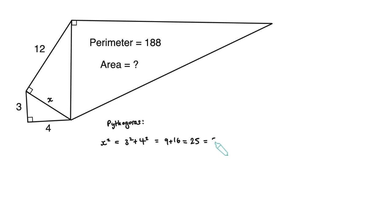or 25, which is five squared, and so X equals five. That's one of the famous Pythagorean triples, three, four, five.